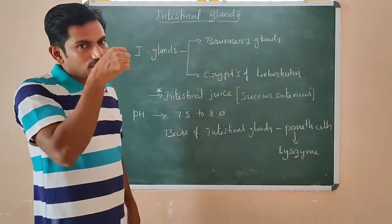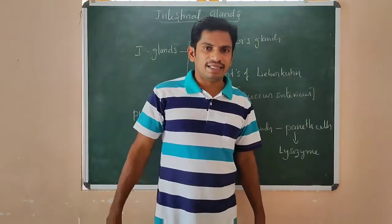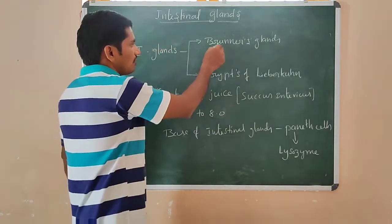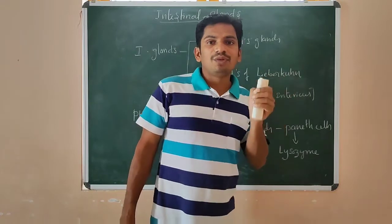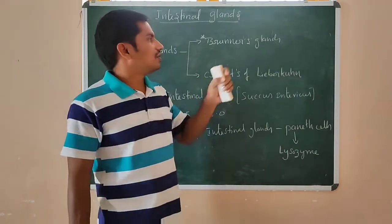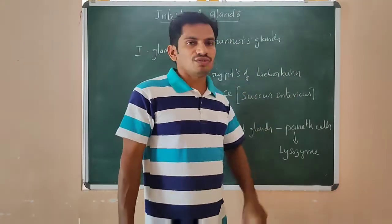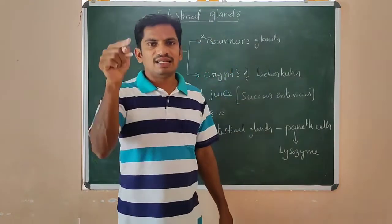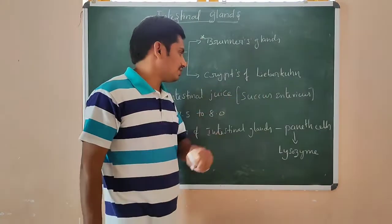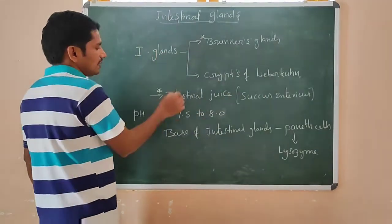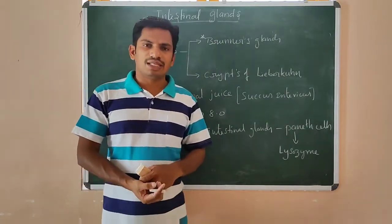Brunner's glands are located in the duodenum of the small intestine, specifically in the submucosa layer. The crypts of Lieberkühn are present in the villi. These all secrete intestinal juice, which mostly acts on protein digestion.